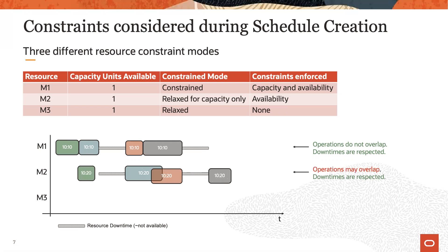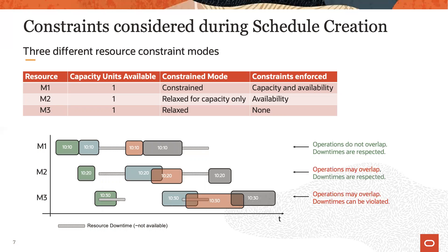Machine M2 is relaxed for capacity only. Therefore, its capacity constraint can be violated, meaning that operations can overlap and exceed available capacity at that time. However, the calendar constraints are still respected. Machine M3 in this example is fully relaxed — operations can overlap and violate capacity constraints, and they can also be scheduled on top of calendar events.